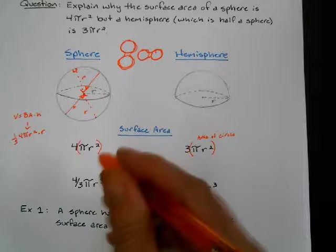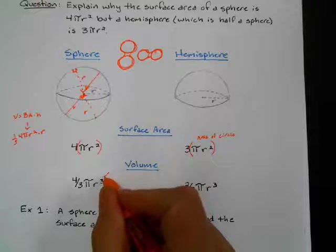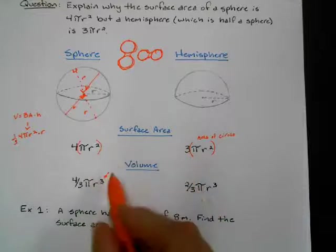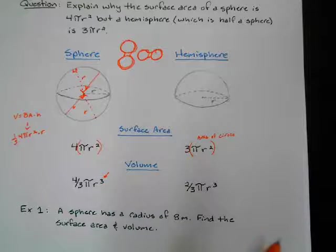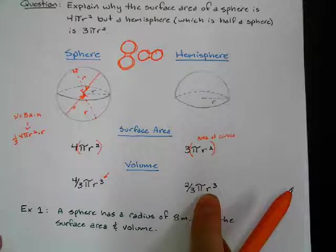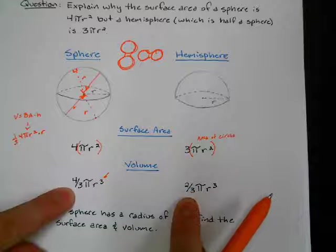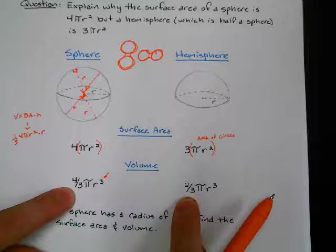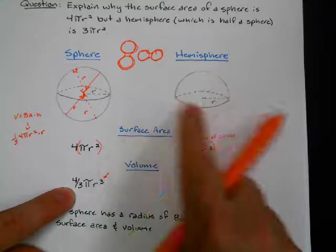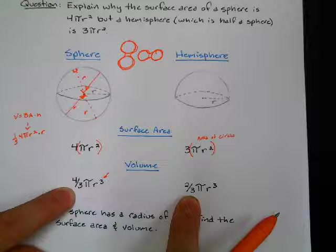Now pay attention to the third power here. This one's to the second, but when we do volume, it's cubed. Now the volume of a hemisphere, half of a circle, is 2/3. So a half of 4/3 is 2/3. And so since we're talking about the inside of the shape, yeah, if you cut that sphere in half, you're just going to get half the shape. So 2/3πr³.